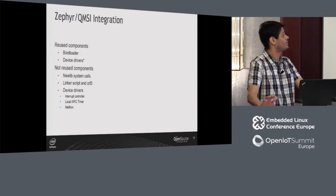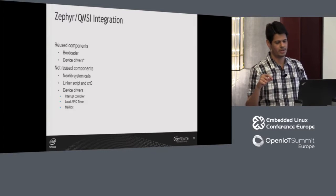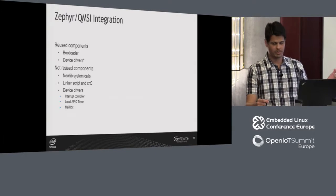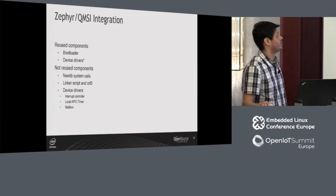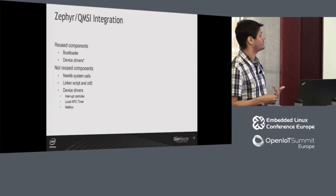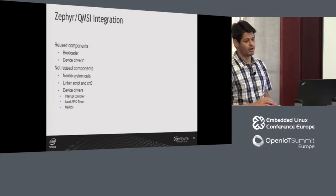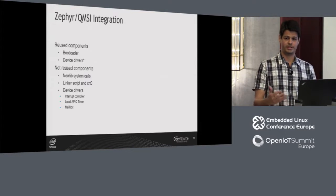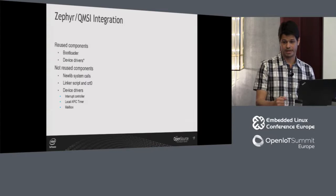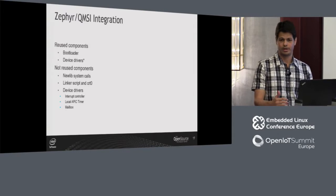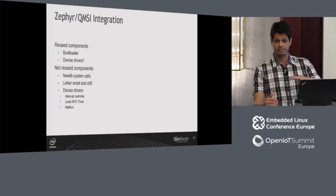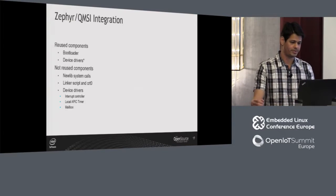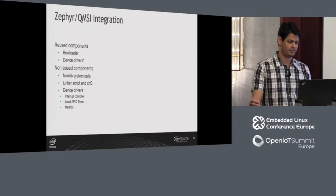For device drivers, we pretty much use all of them — a few are not used and I'll explain why. We are not using the newlib system calls from QMSI, basically because those system calls are implemented on top of QMSI APIs, and in Zephyr, since we support multiple architectures, it makes more sense to have a single implementation based on Zephyr APIs that will be used across all architectures and ports.